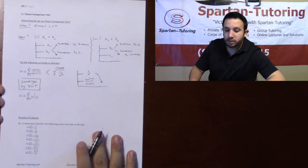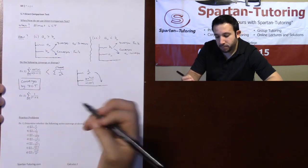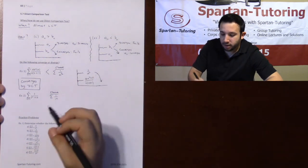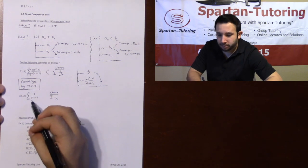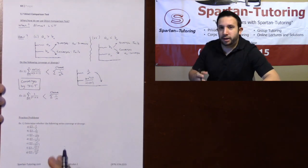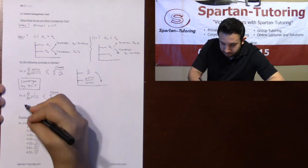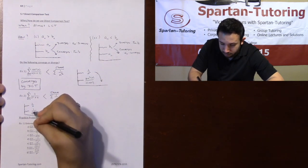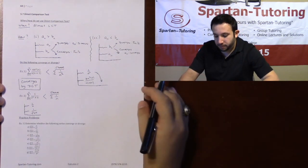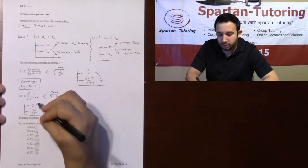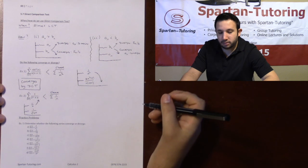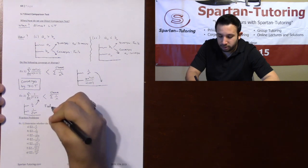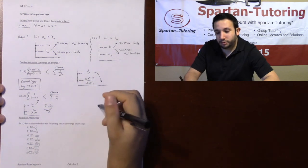For number two, I have one over (two to the N plus N). Let's try choosing one over N. By the same logic, I'm adding stuff on the bottom, so one over N is bigger than one over (two to the N plus N). But I come across an issue: one over N diverges — it's an infinite sum — so I have no clue what this series is doing. We chose poorly, and the test fails. We've got to do it again.